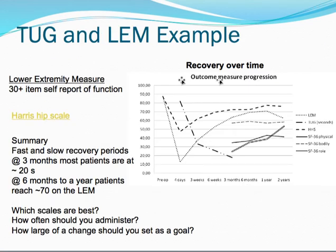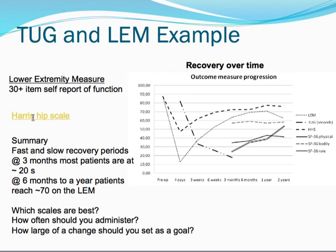So let's be very practical. Let's compare a couple of scales. This is data from a prognostic study using the Lower Extremity Measure, which is a 30-item self-report that was developed for hip fracture patients. The Harris-HIP score is a competing scale that's widely popular and was developed by experts, primarily orthopedic surgeons and other clinicians. So if we look here at this graph, let's just compare the two scales.